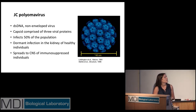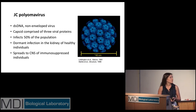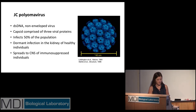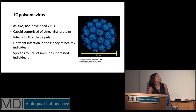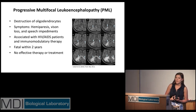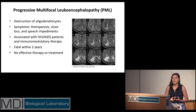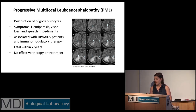This virus is thought to infect nearly 50% of the population; however, it persists as a dormant infection within the kidney of healthy individuals. During severe immunosuppression, the virus is able to migrate from the kidney into the central nervous system. Once there, it is responsible for a disease called progressive multifocal leukoencephalopathy, or PML, which is noted by the destruction of oligodendrocytes — cells specifically known for producing the myelin responsible for normal brain function.